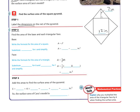Step 2 says find the area of the base and each triangular face. My base is a square. If I know one side is 12, then I know they're all 12. So my area is going to be S squared. Substituting 12, area equals 12 squared. 12 times 12 is 144 inches squared.